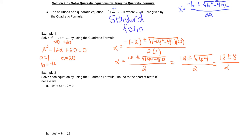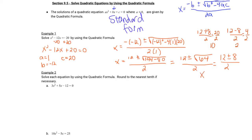Almost there. Now, this plus or minus in the center — you might be wondering what in the world you're going to do with that. Well, this is where we'll split this into two different solutions. One solution is x equals 12 plus 8 over 2, and the other one is 12 minus 8 over 2. So we split that plus and minus up into two different problems. 12 plus 8 is 20 over 2, and that's 10. 12 minus 8 is 4 over 2, and that's 2. So our solutions — x equals 10, 2 — is how I'd like for you to write that.